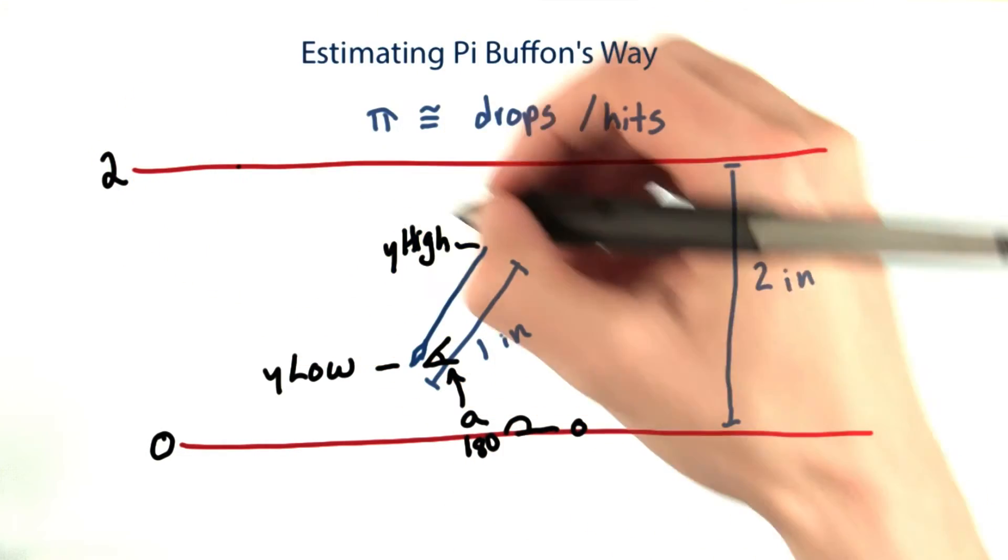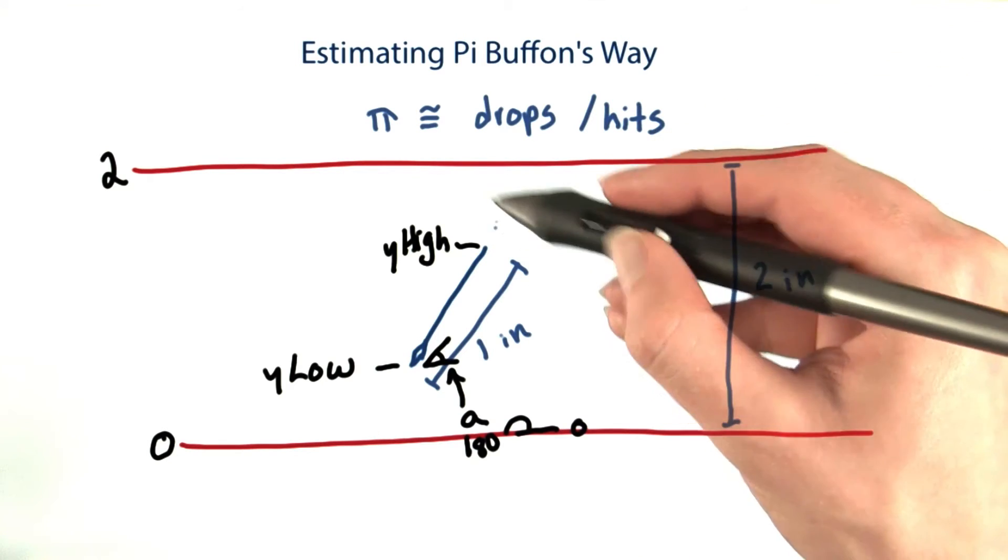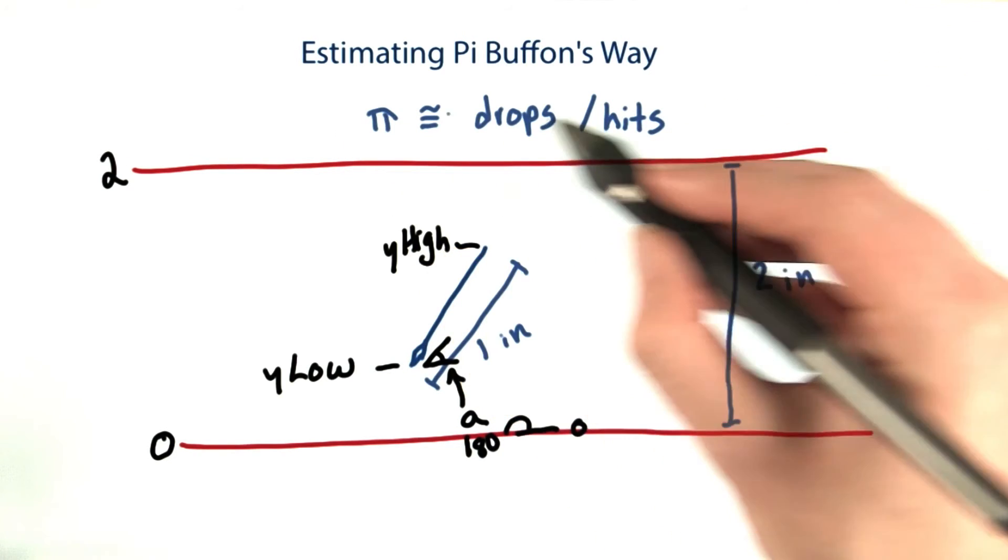If y high is more than 2, we have a hit. Now do this many thousands of times, and we will have an estimate for pi.